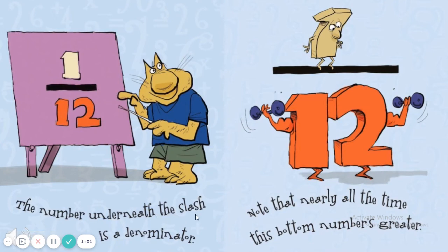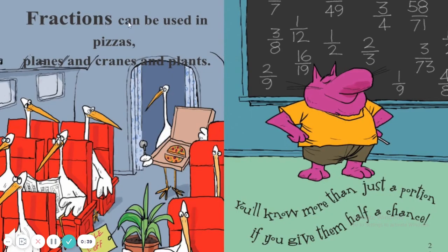The number underneath the slash is called the denominator. Note that nearly all the time, this bottom number is greater. The denominator is at the bottom, and it's what we need to get a whole. Fractions can be used in pizzas, planes, and cranes, and plants. You'll know more than just a portion if you give them half a chance.